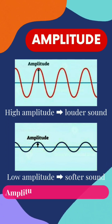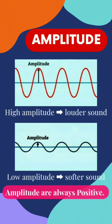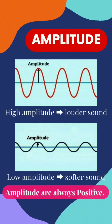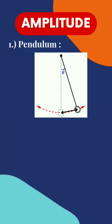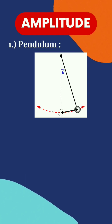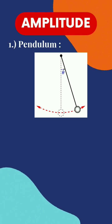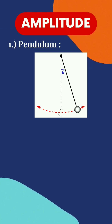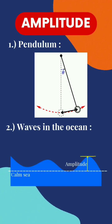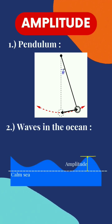Amplitudes are always positive, as negative distance does not exist. Let's go through the examples. First, a pendulum — the maximum displacement is the amplitude of the pendulum. Second, waves in the ocean — the height of the wave from sea level is the amplitude of the wave.